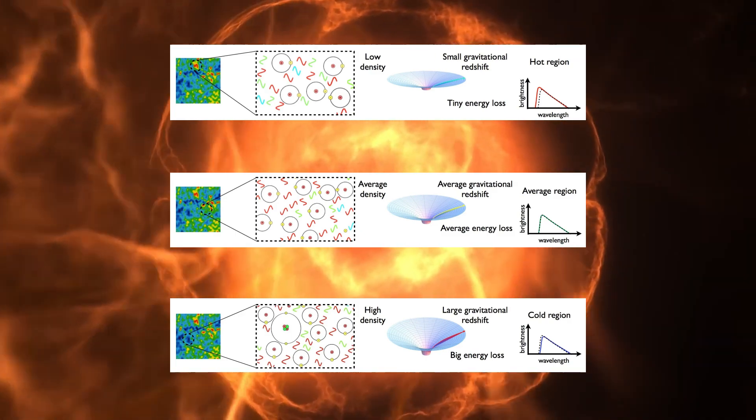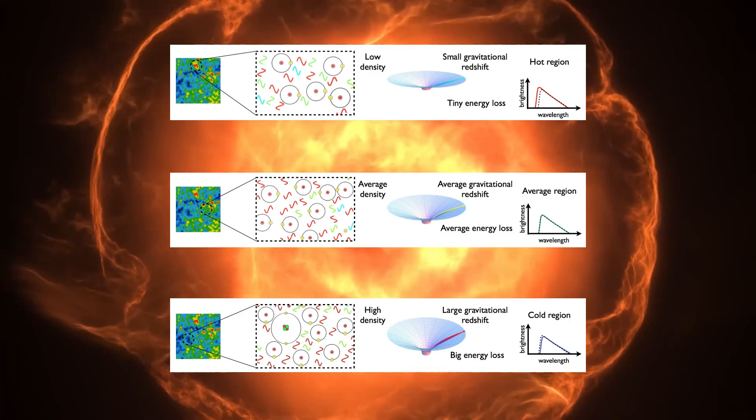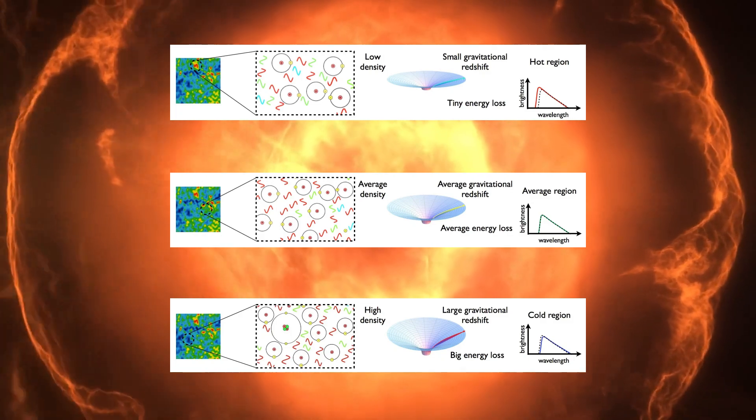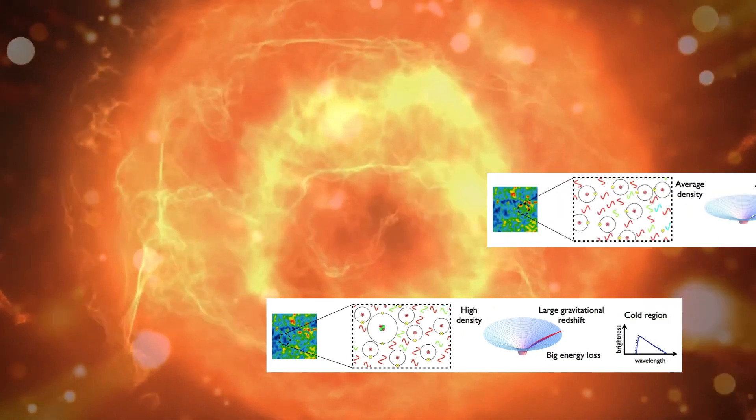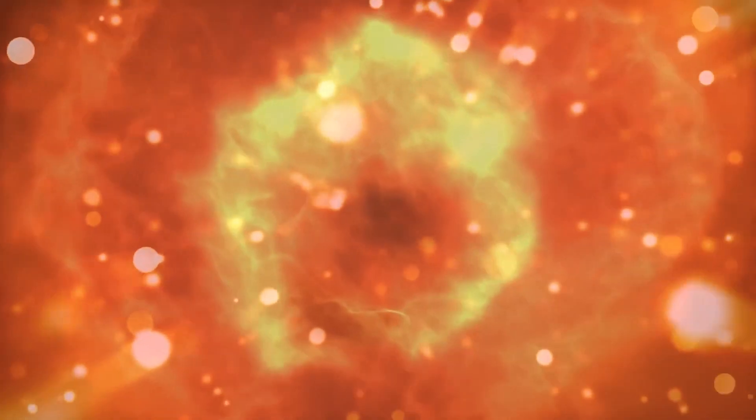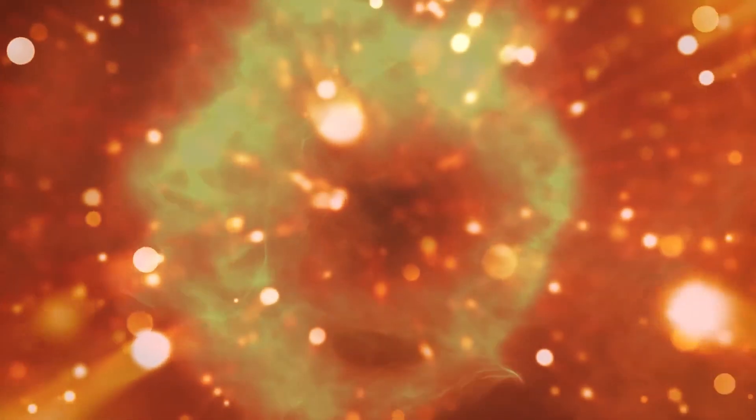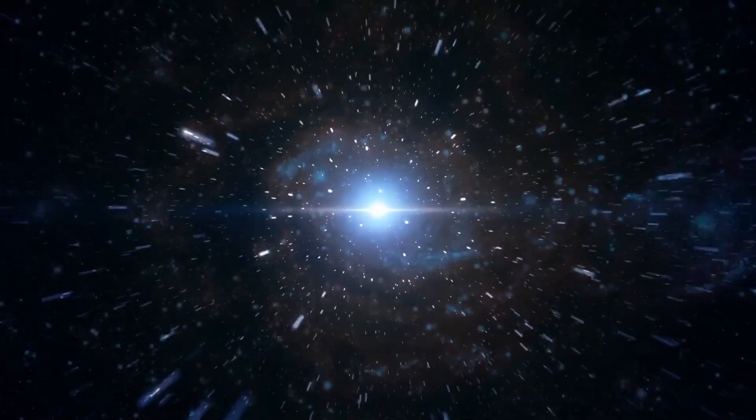It's like having a slightly uneven playing field, where over time, the small advantages and disadvantages get amplified. These tiny temperature differences set in motion a cosmic chain reaction, leading to the formation of galaxies, stars, and eventually, planets and life as we know it.